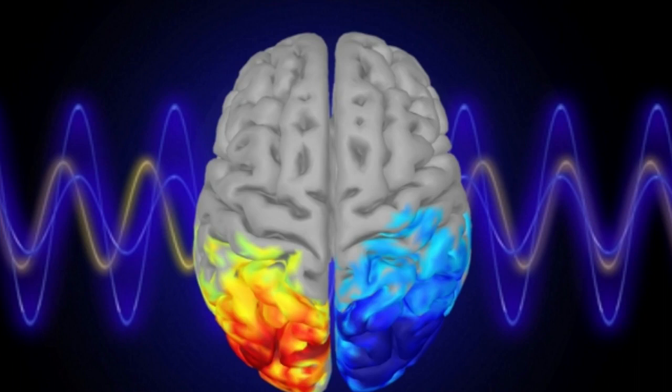To test whether alpha waves actually regulate attention, the researchers designed an experiment in which people were given real-time feedback on their alpha waves as they performed a task.